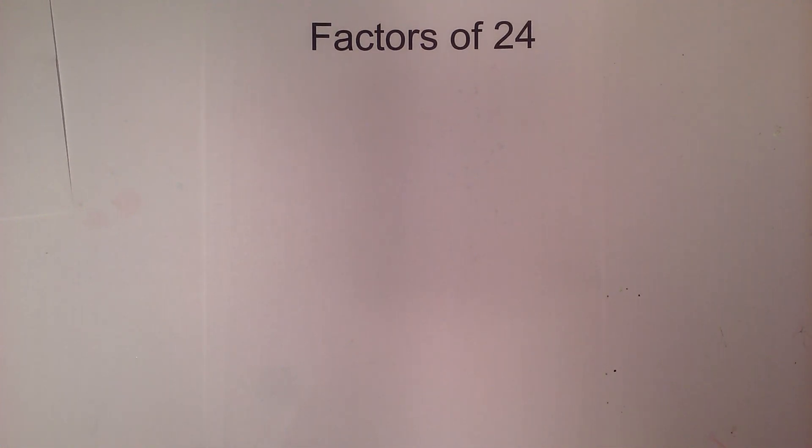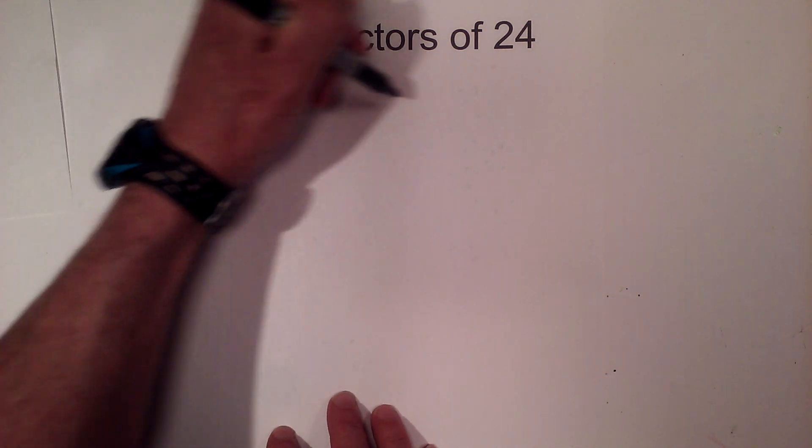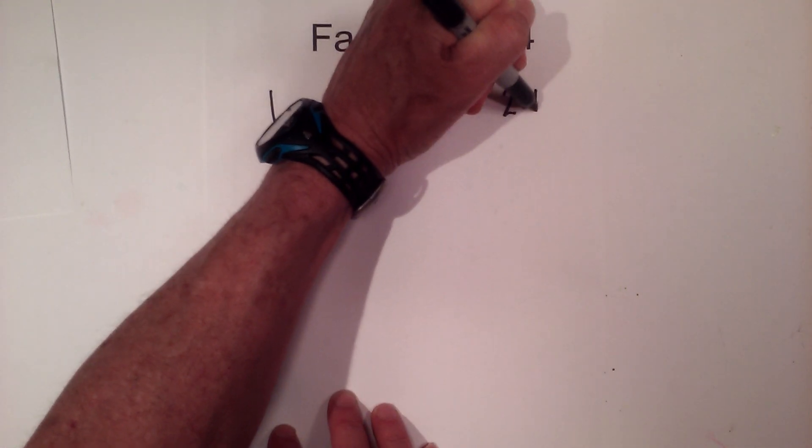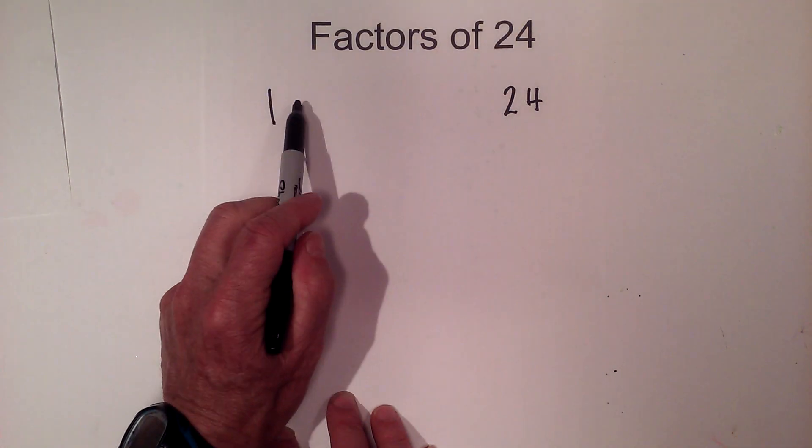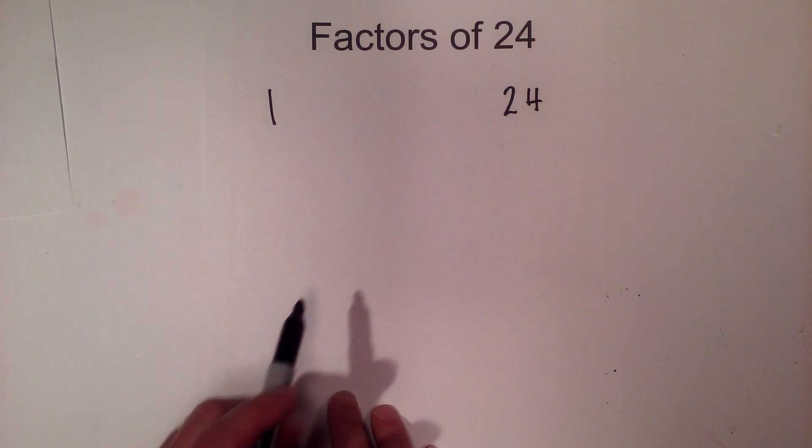In this video let's find all the factors of 24 and then the prime factors of 24. I like to use this method: I just go 1 times 24 equals 24 and then find all the numbers in between that multiply together to equal 24.